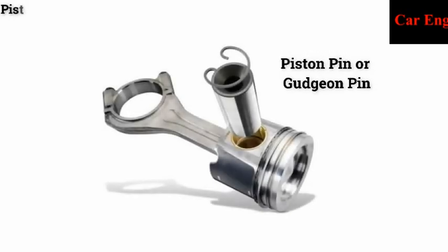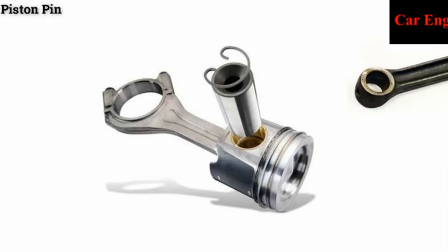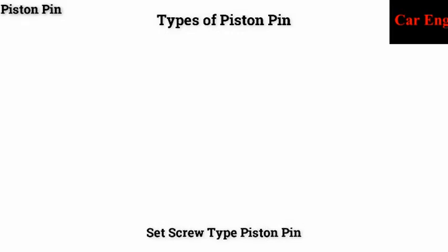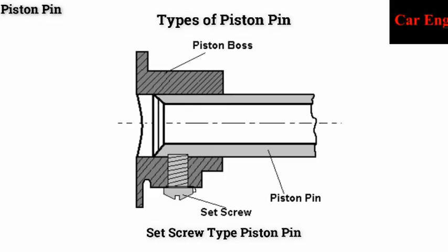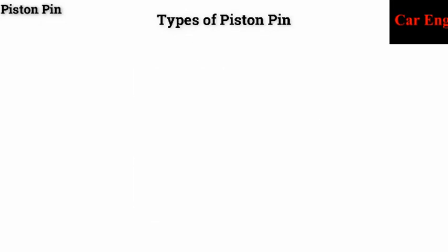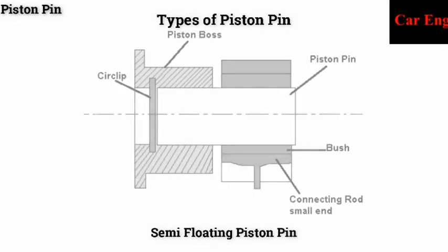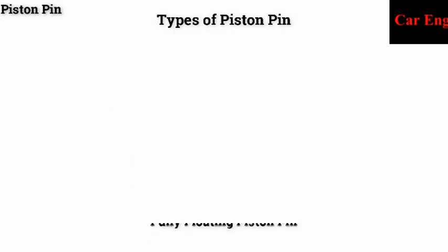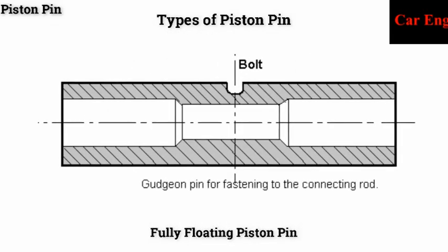The piston pin is also called the wrist pin or gudgeon pin. It is used for connecting the small end of the connecting rod and the piston. It is made hollow to reduce weight and is made from case-hardened steel. Mainly there are three types of piston pins available: set screw type piston pin, which is fastened to the piston by a set screw; semi-floating piston pin, which is fastened to the connecting rod with a clamp screw; and fully floating piston pin, where the pin floats in both the piston bosses and the small end of the connecting rod.